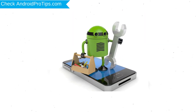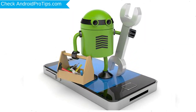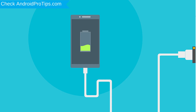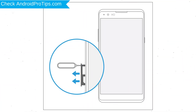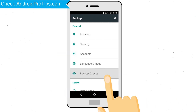Before resetting your mobile: your battery must be above 50%, remove SD Cards and SIMs, and backup your Android mobile data if possible.